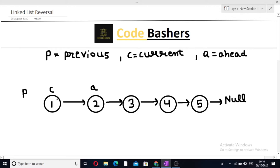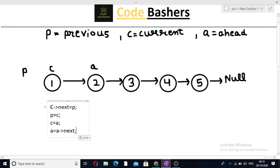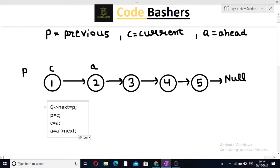At every iteration, we will iterate through the linked list and perform this set of code: C.next equals P, P equals C, C equals A, and A equals A.next. I will dry run this code on the linked list to show how the linked list gets reversed.